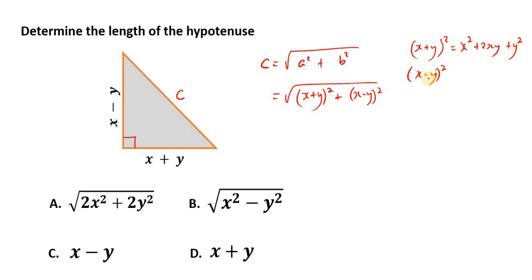For the next binomial, X minus Y, we're going to square it. To expand, we square the first term, which is X squared.